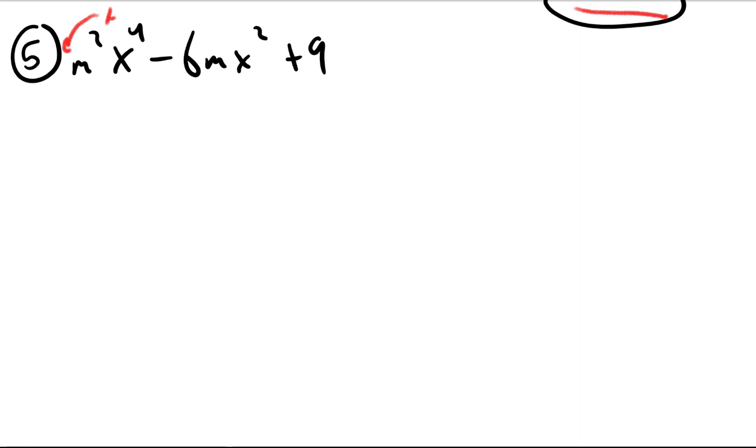So the number out front here would be A. That would be 1. B is going to be negative 6 and C is going to be 9. We're just looking at the coefficients there. And so product sum method.